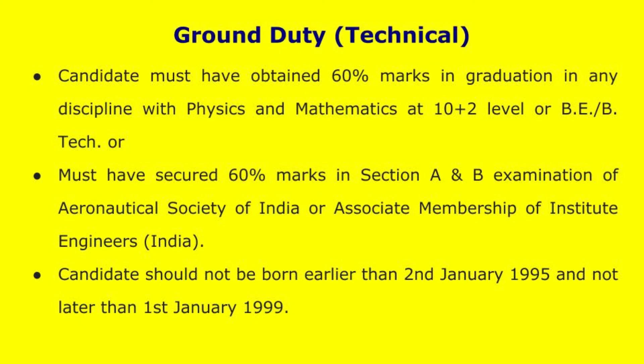Ground Duty Technical: minimum 60% marks in graduation level in any discipline with Physics and Mathematics at 10+2 level. Completed 4 years of graduation in Engineering or Technology, must obtain 60% marks in Section A and Section B examination of Aeronautical Society of India or Associate Membership of Institute of Engineering India.